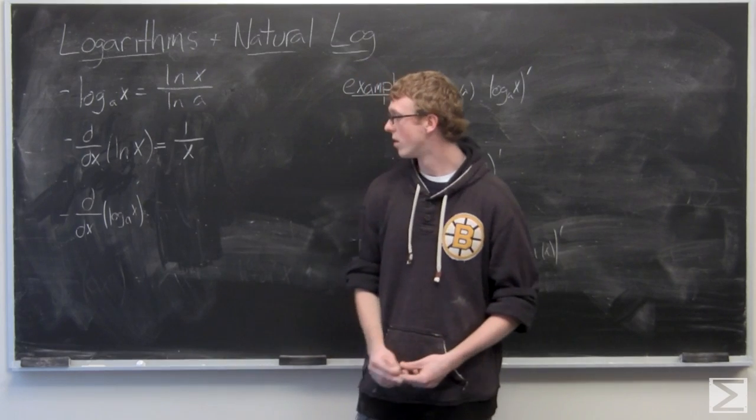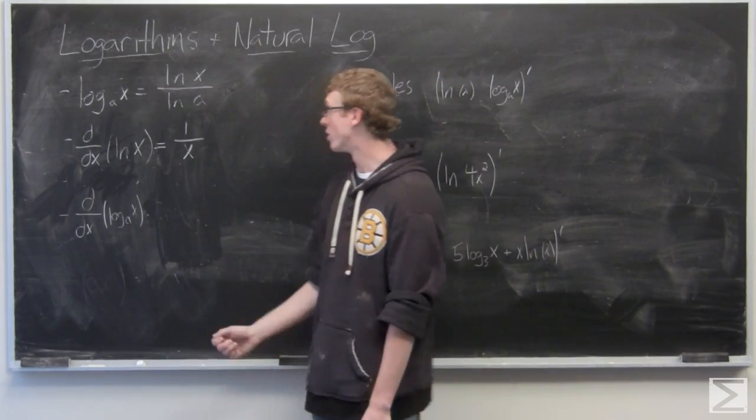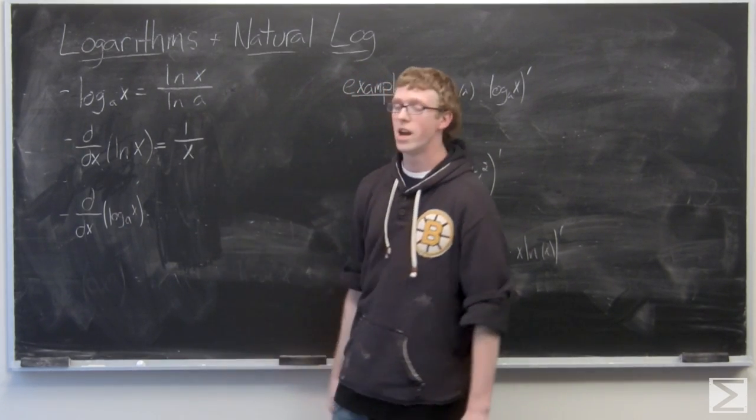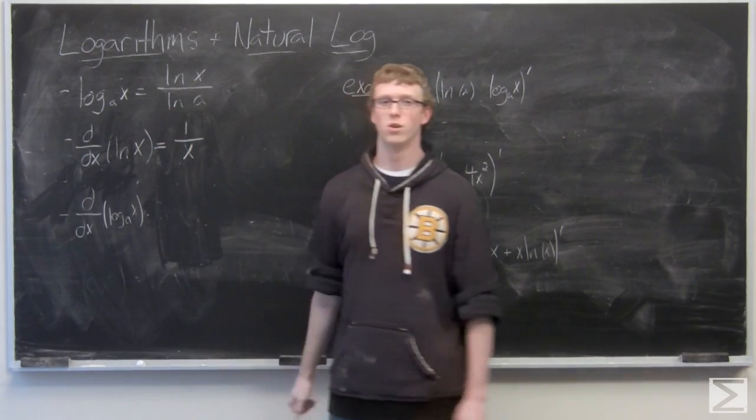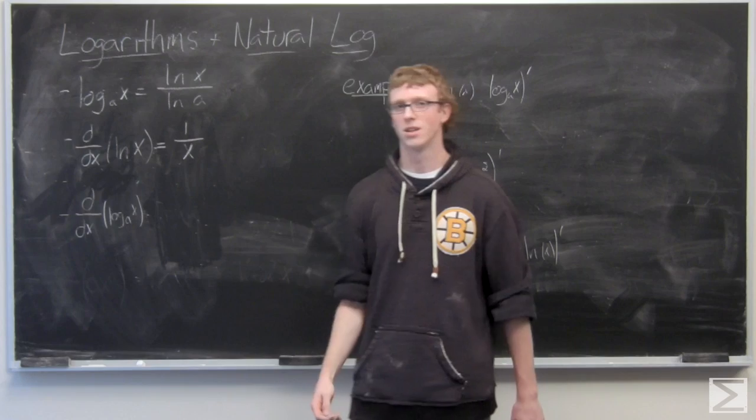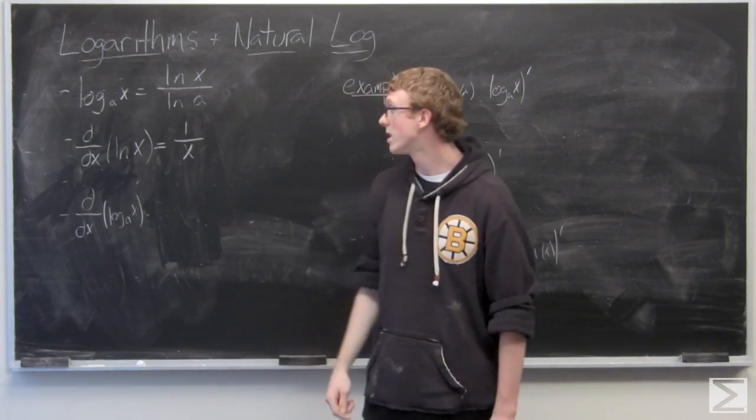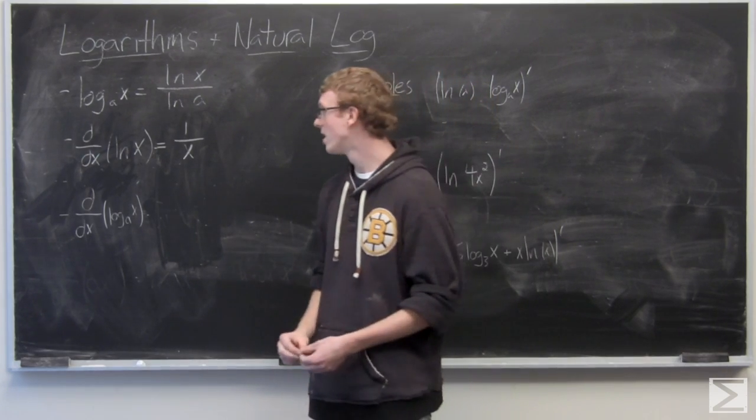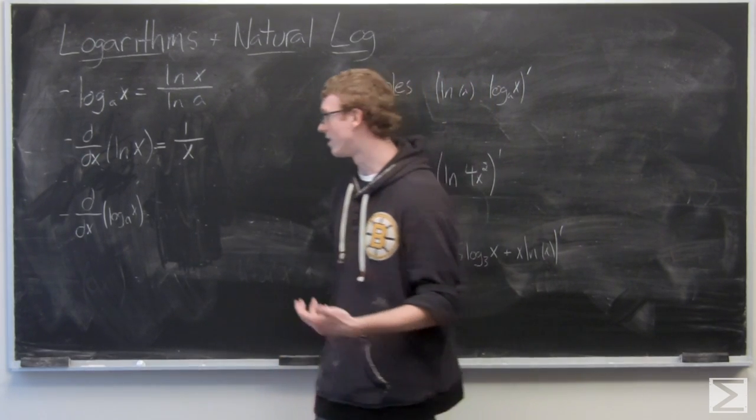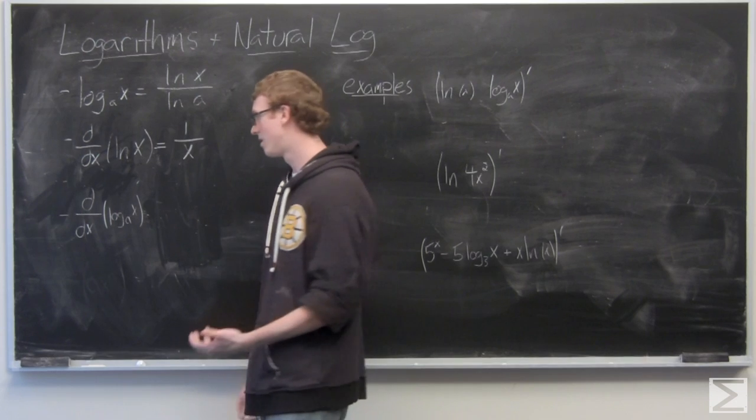Now the derivative of log a of x we could just change that to the derivative of ln x over ln a, and then we could treat one over ln a as a constant because it's not going to have any change on the derivative of this. So we have one over ln a times ln x, and we want the derivative of that, it's simply one over x ln a.